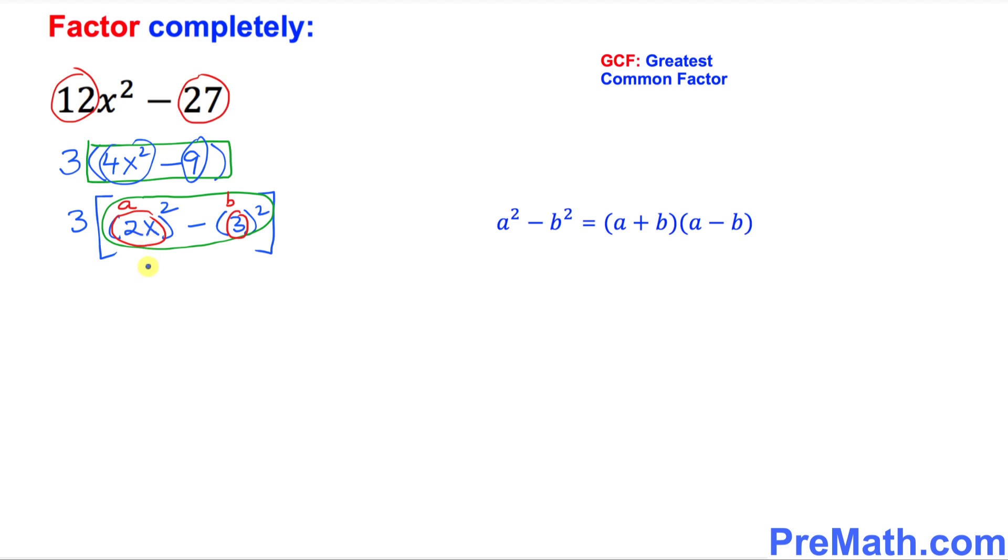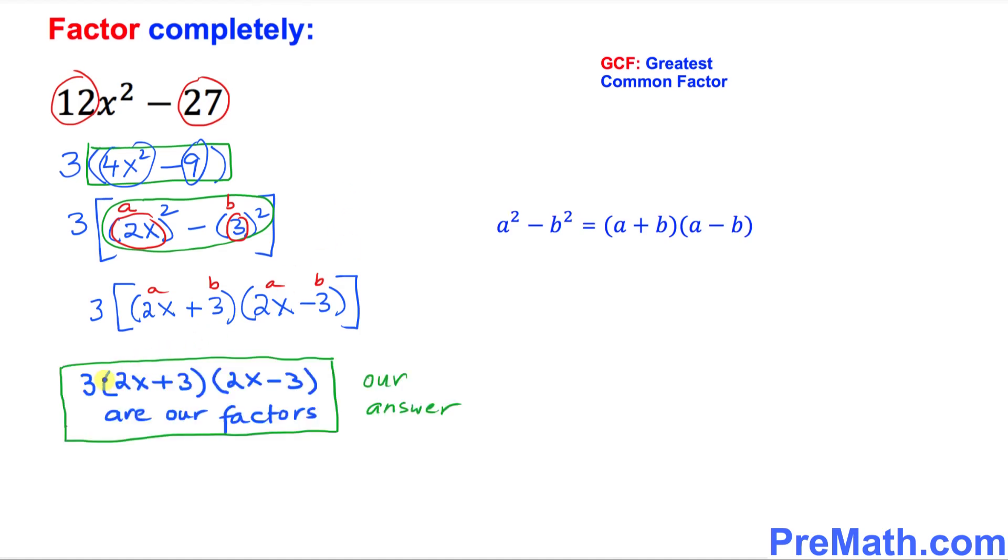Let's simply factor this one out. We're going to be using this formula, so this could be written as 3 is still outside, just leave it there, and this could be written as 2x plus 3 times 2x minus 3. So once again, this is your a, this is your b, this is your a, and this is your b. Thus, 3 times 2x plus 3 times 2x minus 3 are our complete factors, and that is our answer.